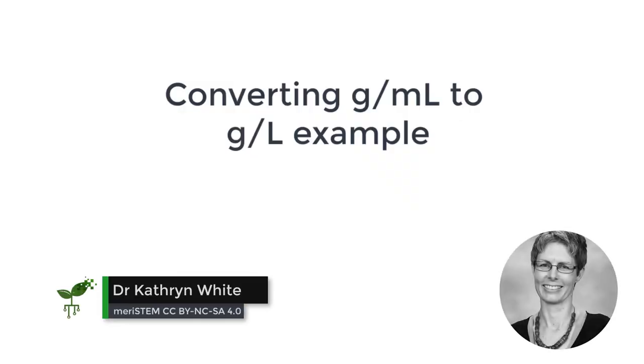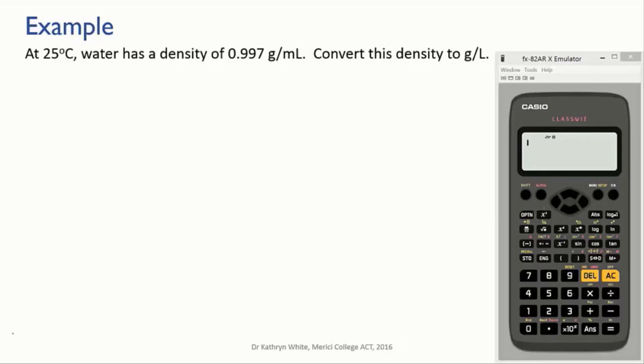In this video, we'll continue to look at unit conversions but we'll try some more complex examples. Let's take this example: at 25 degrees Celsius, water has a density of 0.997 grams per milliliter, and we want to convert this density to grams per liter.